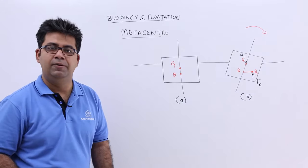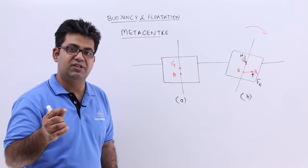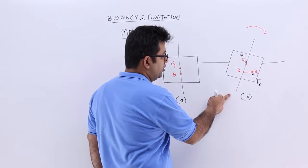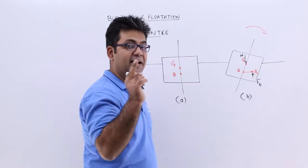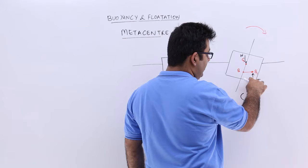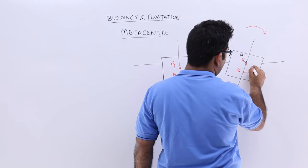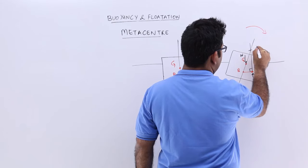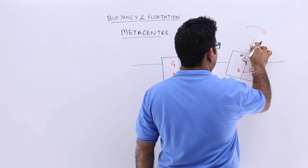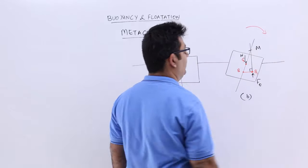Now what is this metacentre all about? This metacentre is basically a point which is the intersection of this original axis and a normal line which is drawn through point B1 and it is normal to BB1. So if you draw this line, this point is called the metacentre. So this is capital M.